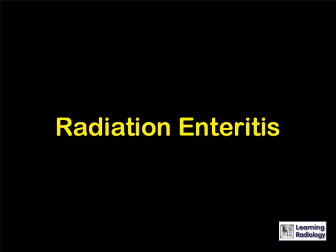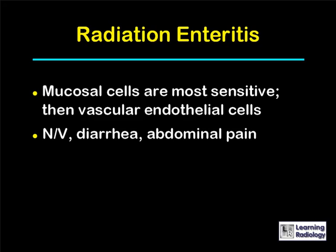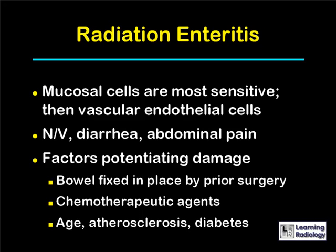Radiation enteritis: the mucosal cells are the most sensitive in the gastrointestinal tract, followed by the vascular endothelial cells. Symptoms include nausea, vomiting, diarrhea, and abdominal pain. Factors which can potentiate or accelerate radiation damage include bowel that is fixed in a certain location by prior surgery and its adhesions, certain chemotherapeutic agents, the patient's age, the presence of atherosclerosis, or the concomitant presence of diabetes.